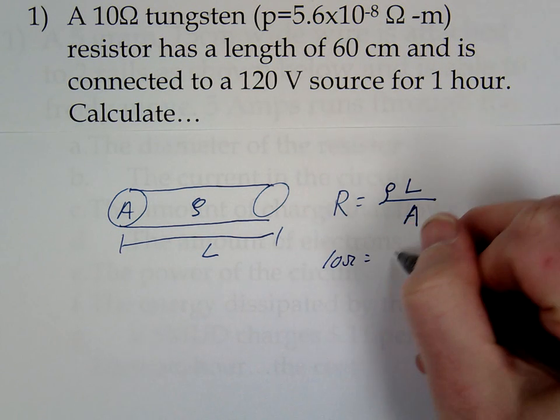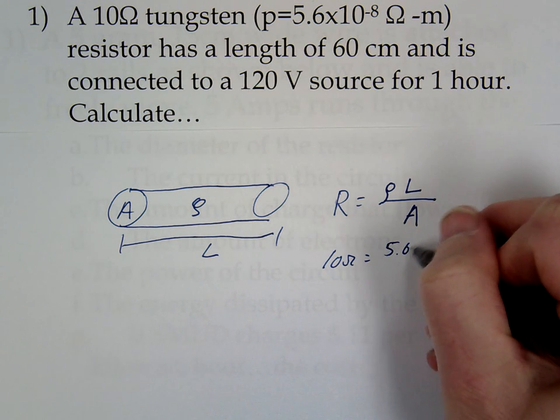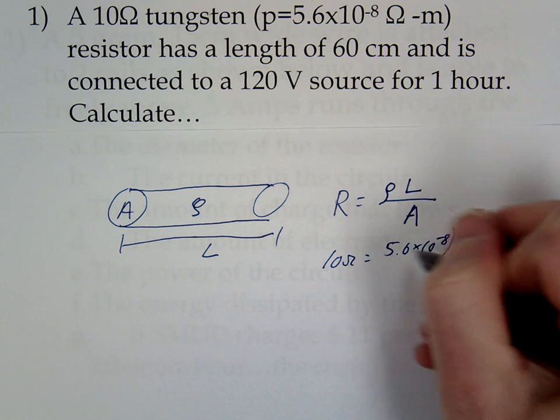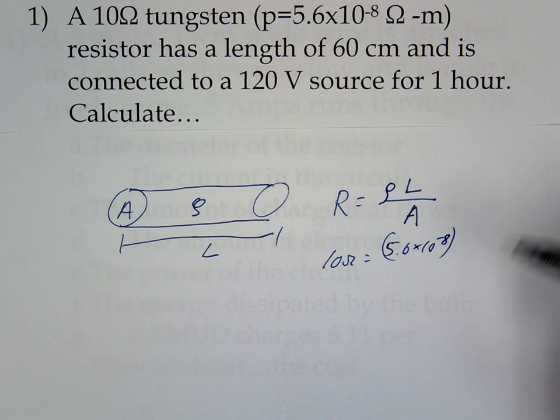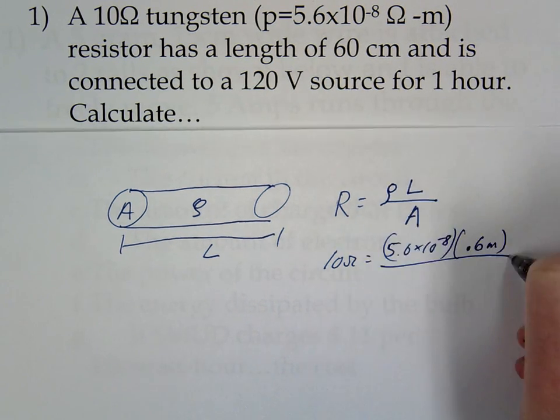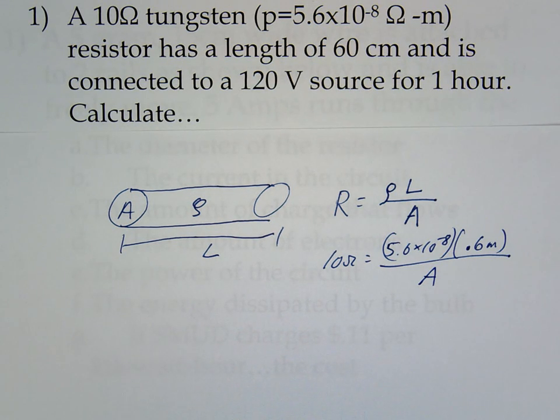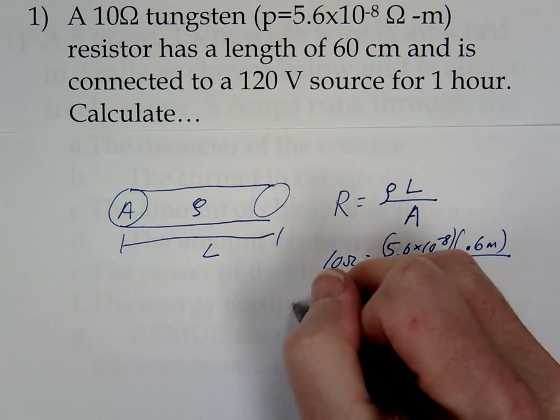So we have 10 ohms. Resistivity for this, 5.6 times 10 to the negative 8. So this is a metal, low resistivity. And don't forget to convert to meters. This will actually give us our area, right? What are you getting for the area?